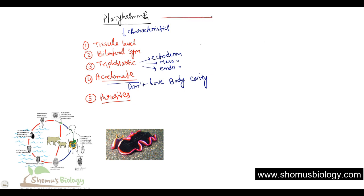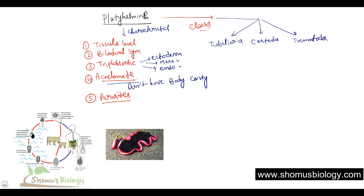Now let's talk about the classes or classification. The classification can be put into three different classes: the first is Turbellaria, the second is Cestoda, and the third is Trematoda. Among these three types, Turbellaria are free-living, and the example is Dugesia.